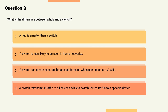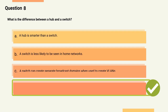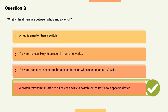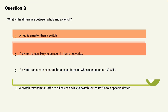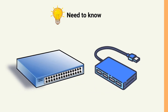Question 8: What is the difference between a hub and a switch? Options: A) A hub is smarter than a switch, B) A switch is less likely to be seen in home networks, C) A switch can create separate broadcast domains when used to create VLANs, D) A hub retransmits traffic to all devices, while a switch routes traffic to a specific device. The correct answer is Option D. Explanation: Switches route traffic to specific devices, while hubs retransmit traffic to all devices.